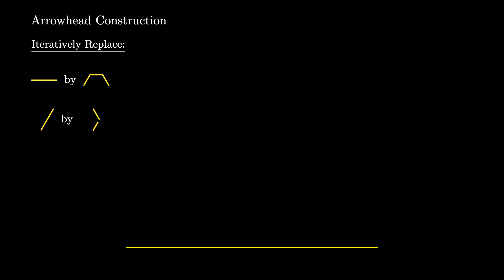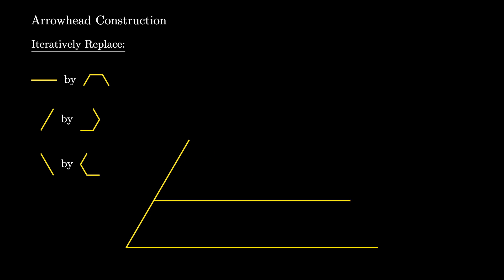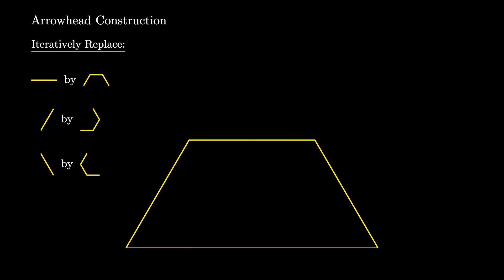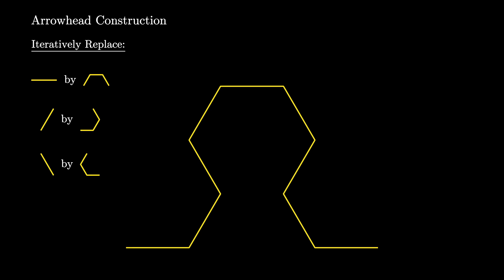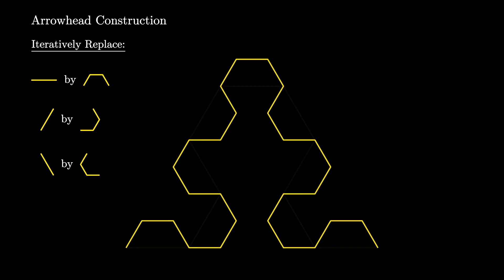The final construction we present is called the arrowhead construction. We first begin with a line segment of unit length, and we iteratively replace line segments in the following manner: we replace horizontal lines by a trapezoidal shape, 60-degree angle lines by another trapezoidal shape, and negative 60-degree angle lines by yet another trapezoidal shape. So in round one, we take the horizontal line and replace it with this shape. Now we replace each of the three lines with the trapezoidal shapes, and we continue this process for as many iterations as we want.